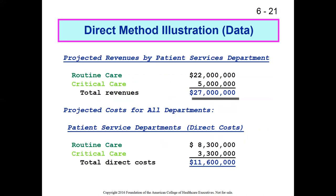On this slide, we see projected revenues for the patient services departments. Routine care is expected to make $22 million in revenue this year; critical care, $5 million. So the organization is going to bring in $27 million in revenue. Remember, the patient services departments are the departments that generate the revenue for the organization — that's all of the revenue that will be generated.